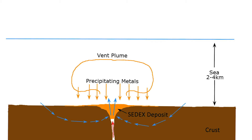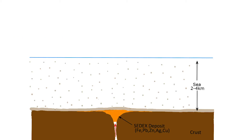This occurs over a long period of time, perhaps hundreds of thousands of years, during a relatively quiet period of tectonic activity in the region. When this quiet period ends, marked by an increase in earthquakes due to tectonic activity, large amounts of sediment enter the basin, blanketing the seafloor and causing the venting to cease.